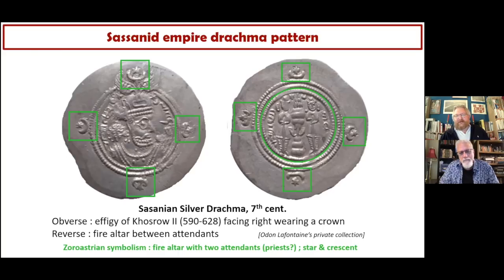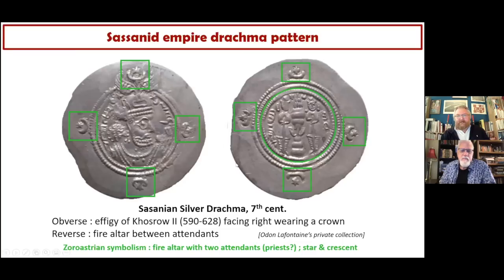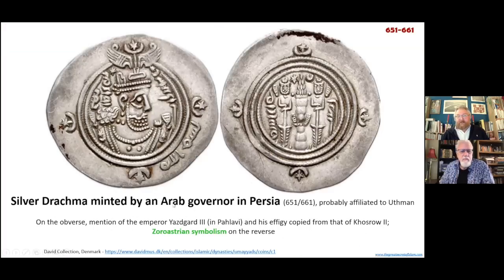Stubborn Muslims will tell you that because those very Zoroastrian symbols were used on so-called Islamic coins, it must have been Islamic — but it doesn't work that way. This other coin was minted according to the same Sassanid pattern. It was minted by an Arab governor in Persia between 641 and 661. Should the standard Islamic narrative be true, this Arab ruler could have been affiliated with Uthman — whether Uthman is a real historical figure is another issue.